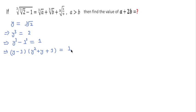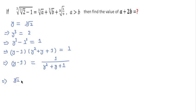This means y minus 1 equals 1 over (y² plus y plus 1). Now put the value of y, that is cube root of 2. In place of y², squaring cube root of 2 gives 2 to the power 2/3, and cube root of 2 is 2 to the power 1/3, plus 1.